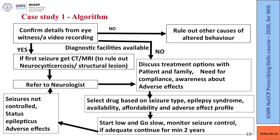Please find an attached document on drugs used in different types of epilepsies, their doses and adverse effects. Once the drug is selected, start low and go slow. Monitor seizure control and if adequate, continue treatment for a minimum of two years before deciding to taper. In case seizures are not controlled, the patient goes into status epilepticus, or has adverse effects, refer to a neurologist.